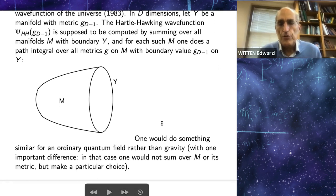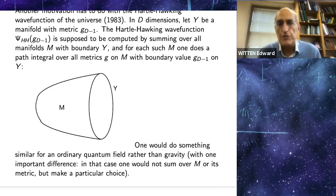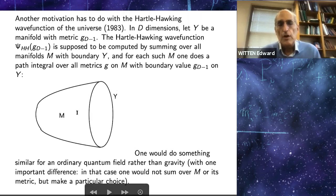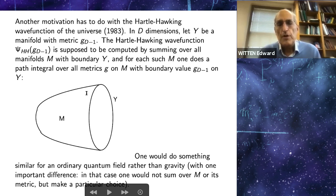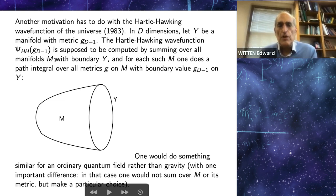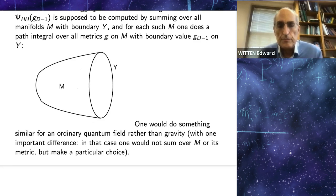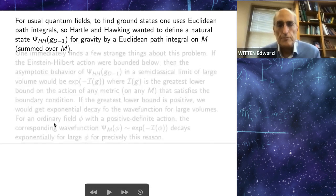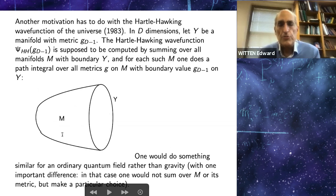This is similar to what you do for an ordinary quantum field rather than gravity, with one important difference. If you were discussing a scalar field on Y, you would pick the boundary values on Y, pick a particular M — you wouldn't try summing over M's — and pick a metric on M. For an ordinary quantum field, for a particular M, you'd integrate over all values on M fixing the boundary values on Y, and that would give you a wave function. For gravity, instead, you don't know what M you should use. You sum over all M's and integrate over all metrics on M. For usual quantum fields, Euclidean path integrals are used to find ground states, and Hartle-Hawking wanted something like that. So M was supposed to be Euclidean, and the metric was supposed to have Euclidean signature.